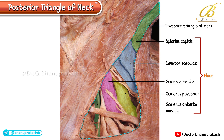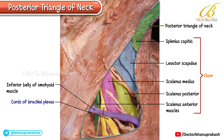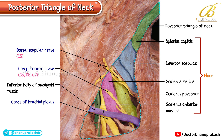In the lower part of the triangle, the inferior belly of the omohyoid muscle is visible, crossing the cords of the brachial plexus, the scalenus medius, the long thoracic nerve, and the scalenus posterior. The dorsal scapular nerve, C5, can be seen piercing the scalenus medius and descending between the levator scapulae and scalenus posterior muscles.